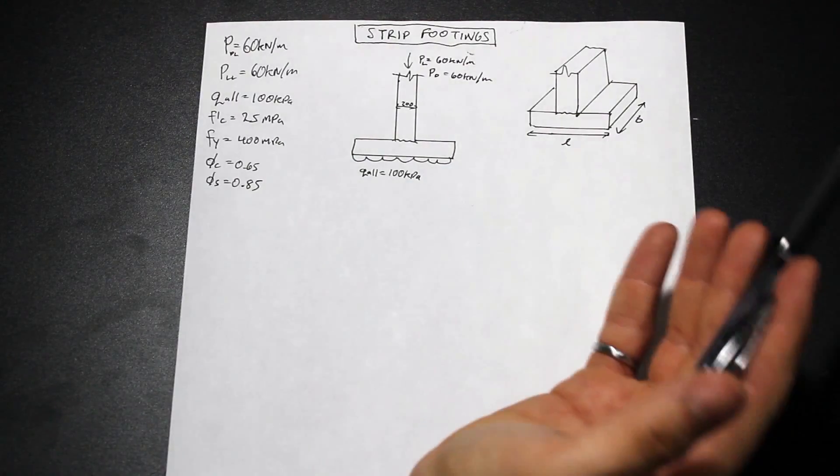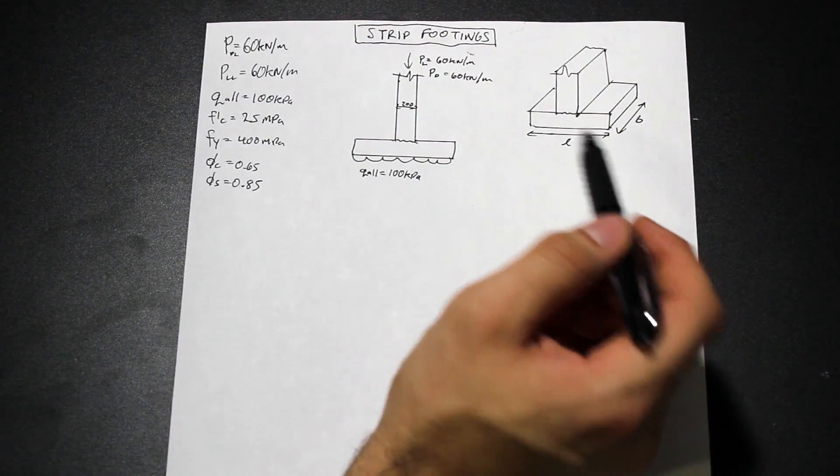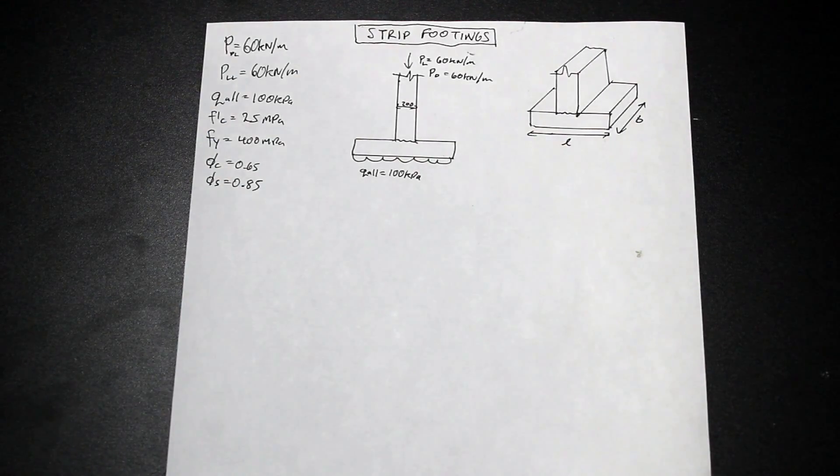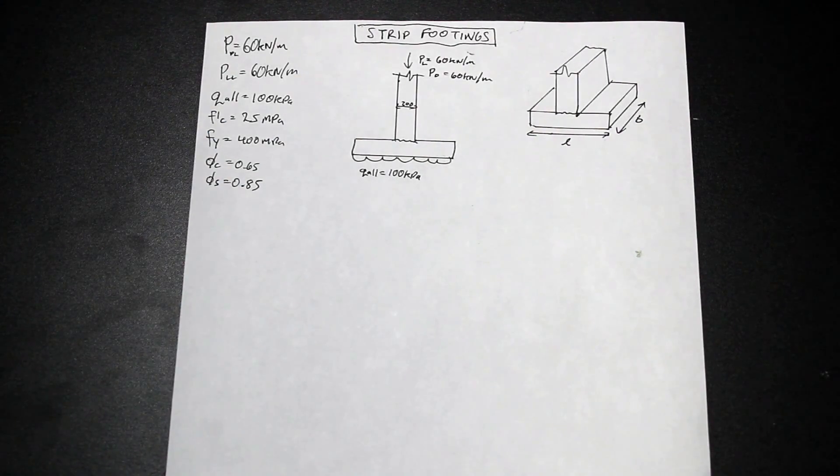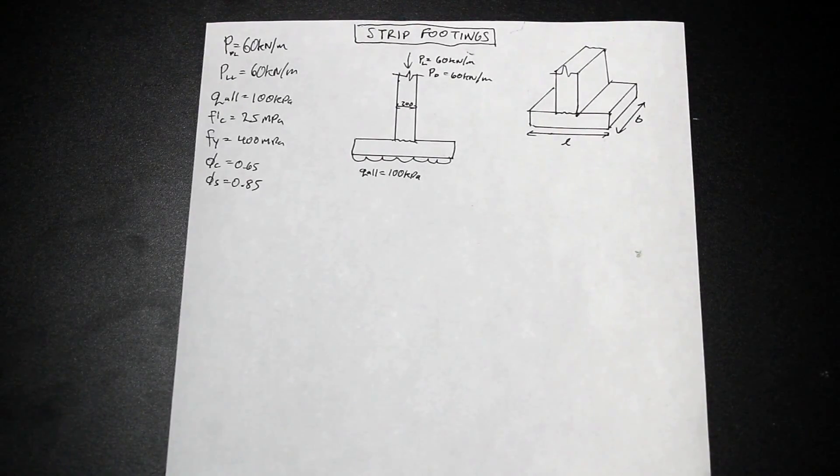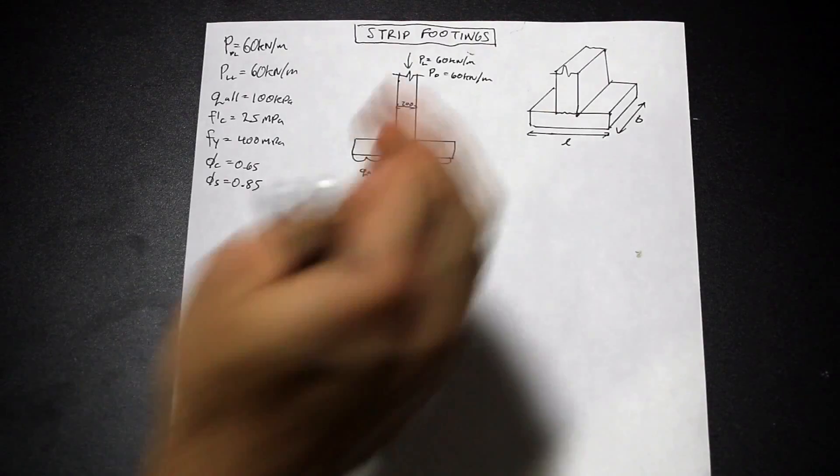These kind of footings, they're a shallow foundation. These shallow foundations are very common. Typically, they can support, depending on your bearing capacity, mid-rise, even high-rise buildings, a combination of strip and spread footings or isolated footings. Typically, as a structural designer, if that's what you're going through in school to be a structural engineer, we're going to design this footing structurally.